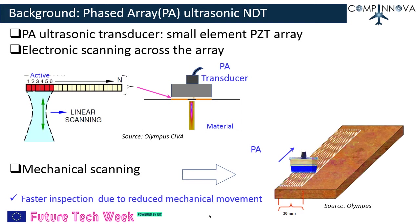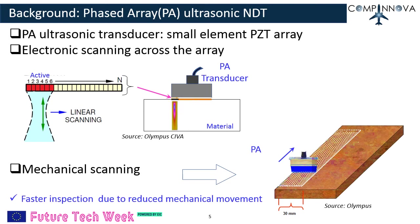Phased array ultrasonic non-destructive testing is an advanced NDT method. A phased array transducer consists of a large number of small PZT elements, usually 64 elements. A group of multiple PZT elements is electronically activated to generate an ultrasound beam into the material, and the reflected ultrasound wave is recorded, followed by sequential activation and switching of the active group across all elements — this is called electronic scanning. Mechanical scanning is performed by physically moving the transducer across the material. All echo signals are processed in real time to obtain a volumetric image, making PA NDT a faster inspection method due to reduced mechanical movement.